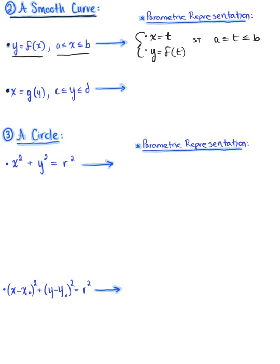The second case is when we have a smooth curve defined as x = g(y), where c ≤ y ≤ d. Here we let the variable y equal our arbitrary parameter t, so x is defined as g(t), and since y equals t, the bounds become t is greater than or equal to c and less than or equal to d. Note that a line segment is also a smooth curve, so either representation can be used depending on the line, but the bounds will depend on the original function and won't necessarily be 0 and 1.